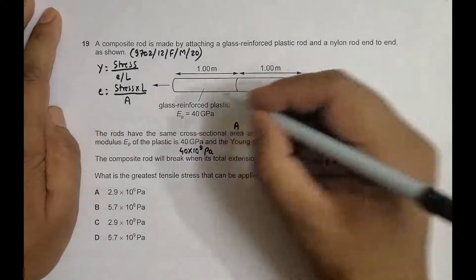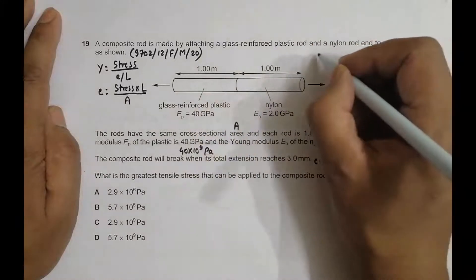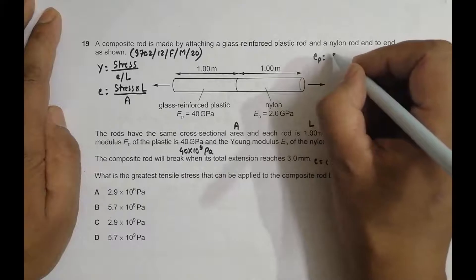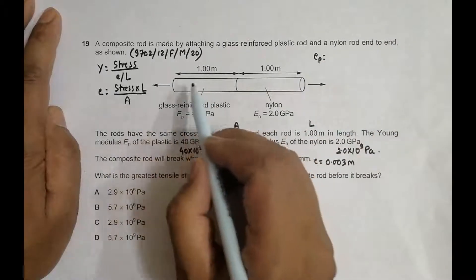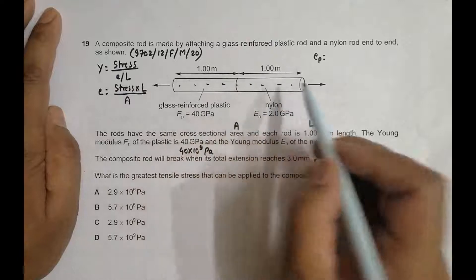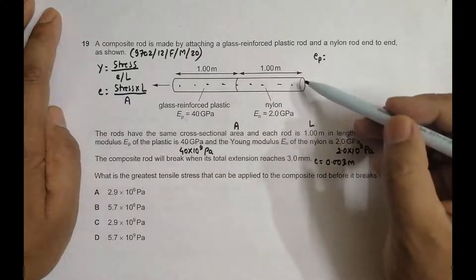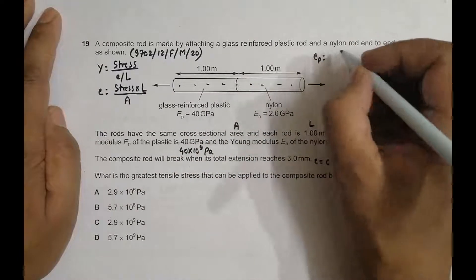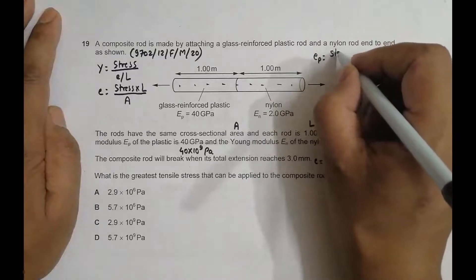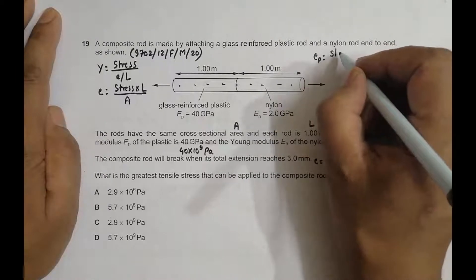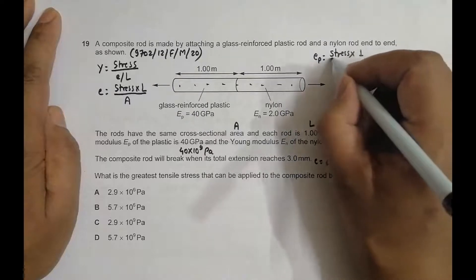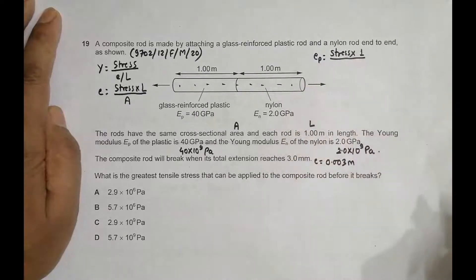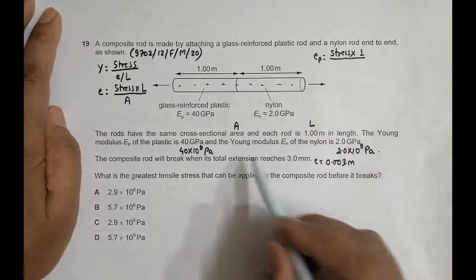For the plastic, ep = (stress × L) / (Ep × A). The stress is the same for both materials because when you extend the rod, the force at every point is the same, and the cross-section is also the same. The length is 1 meter.